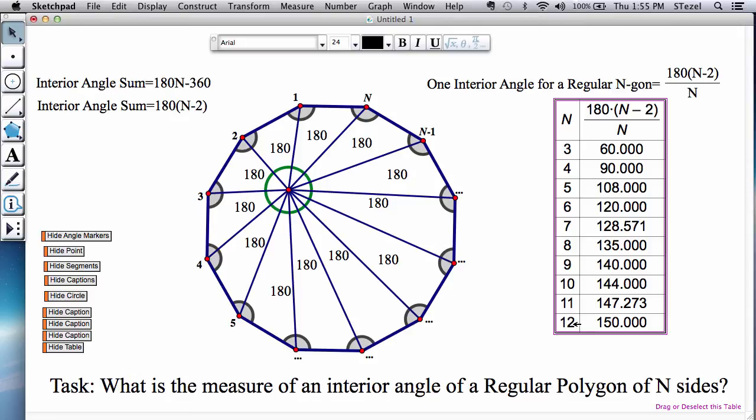And definitely the 12-sided polygon, dodecagon, is 150 degrees, which if you remember we measured earlier and we got that result.